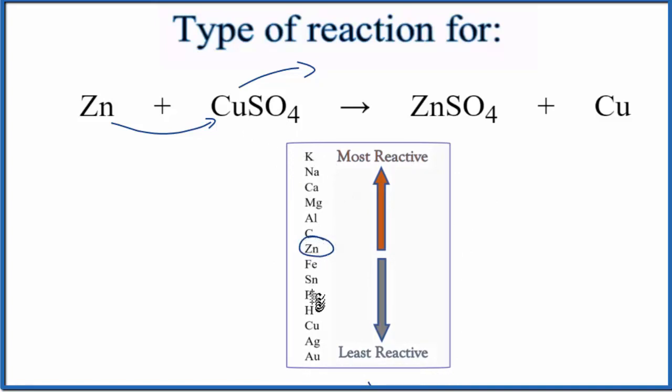And then we're looking for copper, which is way down here. So as we go up, they're more reactive. So zinc is more reactive than copper. That means zinc can push copper out and then bond to the sulfate, and then the copper is all by itself.